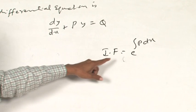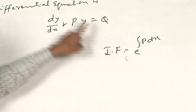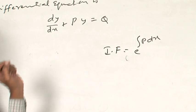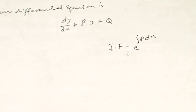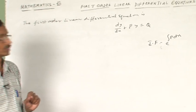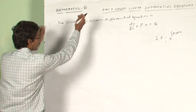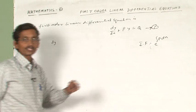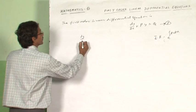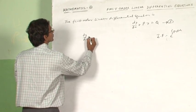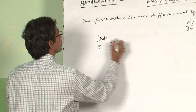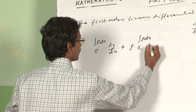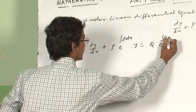If I take this function and multiply the given differential equation on both sides, the LHS becomes the derivative of some function of x and y. Multiplying this equation by the integrating factor e power integral P dx, we get: e power integral P dx times dy by dx, plus P times e power integral P dx times y, equals Q times e power integral P dx.